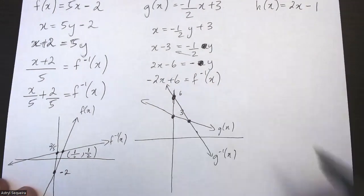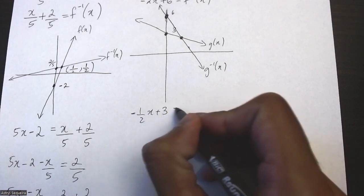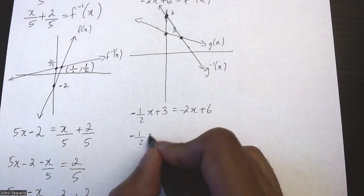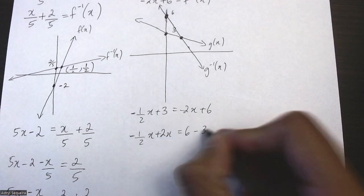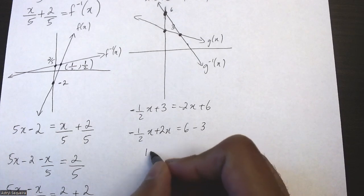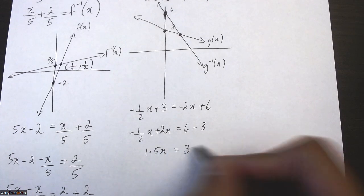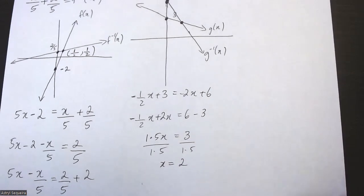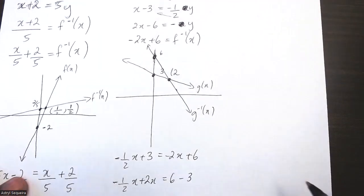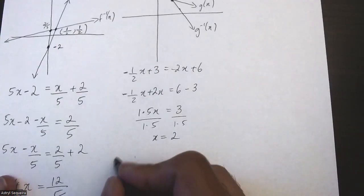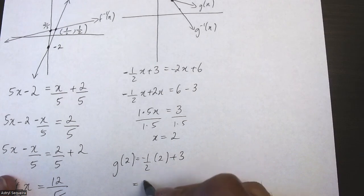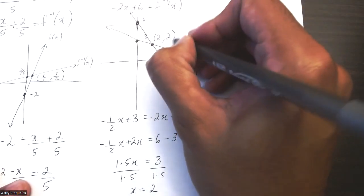To find the intersection, I equate the original and inverse: negative 1/2 x plus 3 equals negative 2x plus 6. Moving terms: negative 1/2 x plus 2x equals 6 minus 3, giving 3/2 x equals 3. Dividing by 1.5, I get x equals 2. Substituting into the original: g(2) equals negative 1/2 times 2 plus 3, which equals 2. So the intersection point is (2, 2).